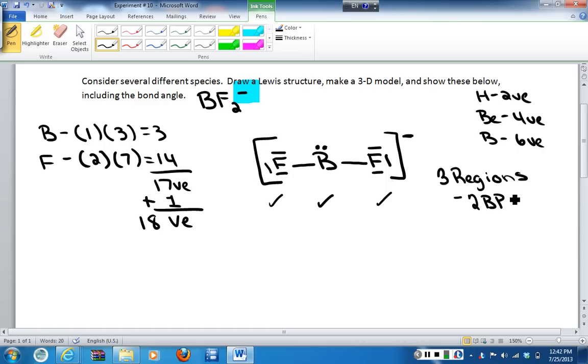And, what I see is that I have 2 bonding pairs, from the bonds from the boron to the fluorine, and 1 lone pair. Now, when I have this combination around my central atom, in total 3, I know that I no longer have a trigonal planar geometry, but rather, I have a bent geometry.